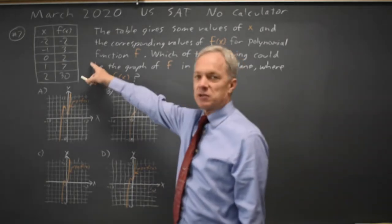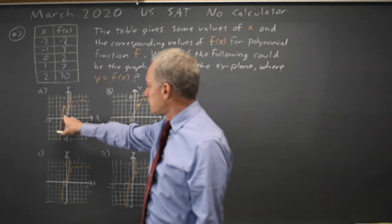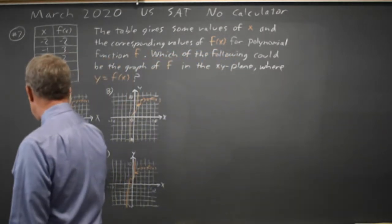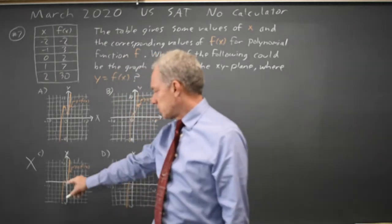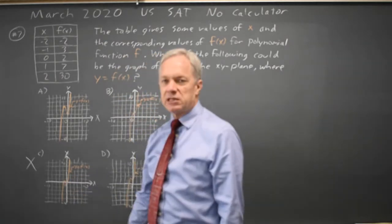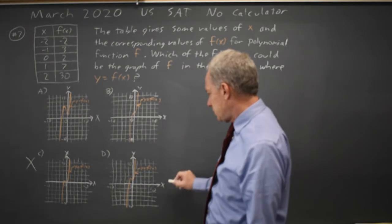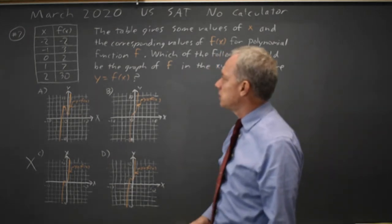At x equals 0, f of x should be 2, and that matches A. It matches B. It does not match C, so C is clearly wrong. Choice C is clearly the point 0, 0, not 0, 2, and choice D is a plausible match, so it's A, B, or D.